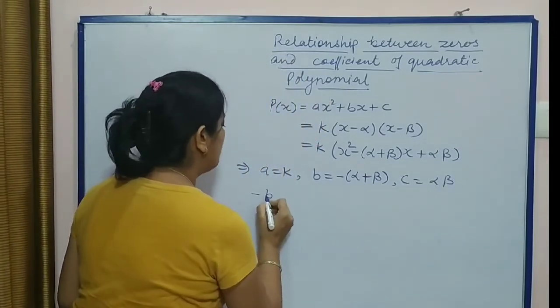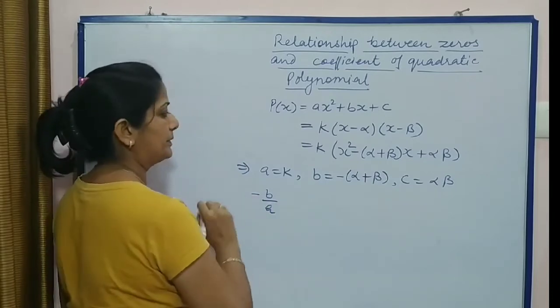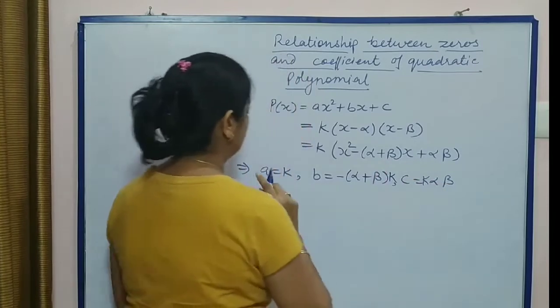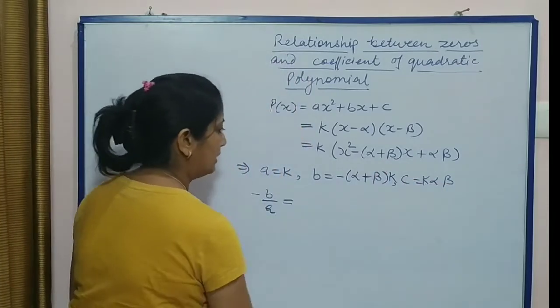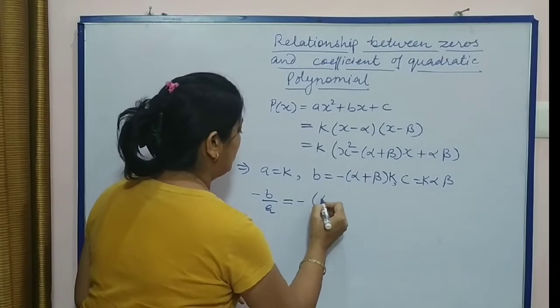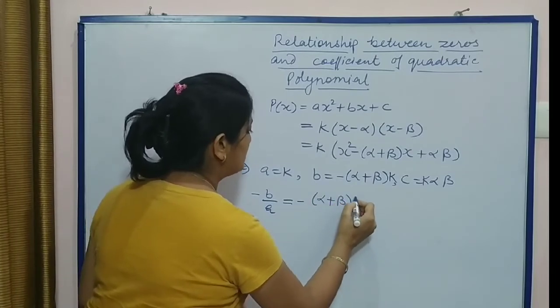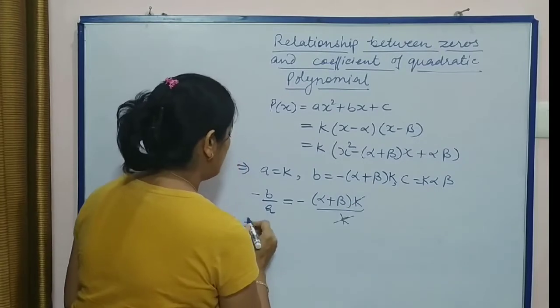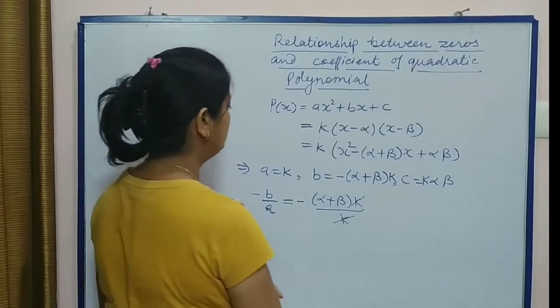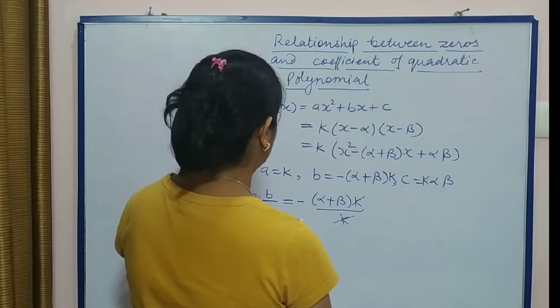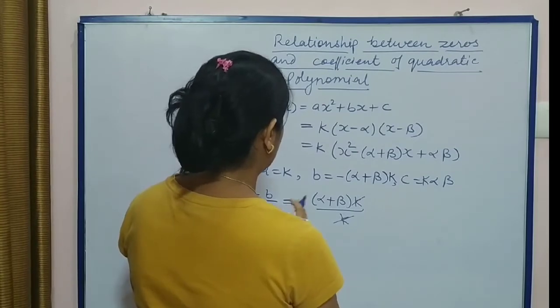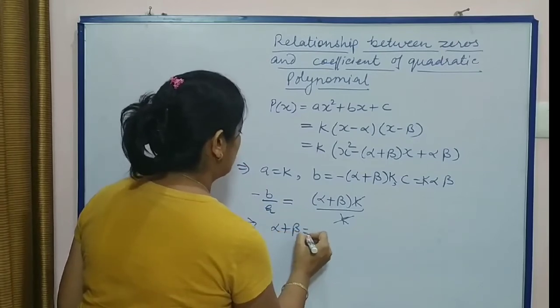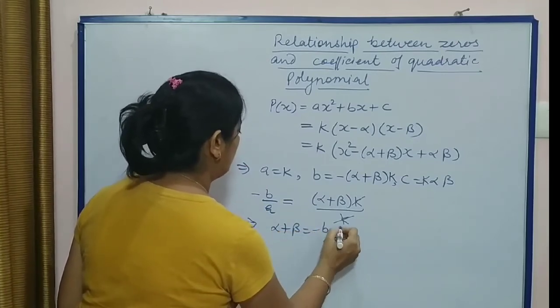Now -b/a - iske saath bhi k lenge aap, aur iske saath bhi k aayega. -b/a - agar hum isko solve karte hain, to kya value milegi humein? Then (α + β) × k / k. k se k cancel. That means α + β is -b/a.